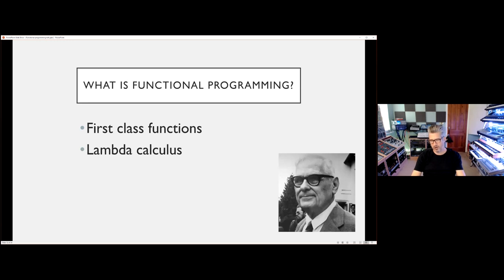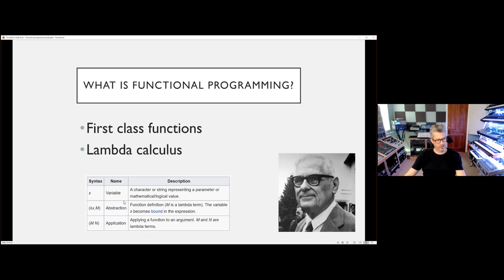If you look at how most functional programming language compilers and type systems are implemented, they lean very heavily on lambda calculus — a formal system of mathematical logic for computation introduced by Alonzo Church in the 1930s, with the simply typed lambda calculus variant from the 1940s. Lambda calculus has just three terms: variables (check, C# has those), abstractions (lambdas — check), and application (invoking a lambda with an argument — check). With just those three concepts you have all you need for computation. It's a general theory of computation.